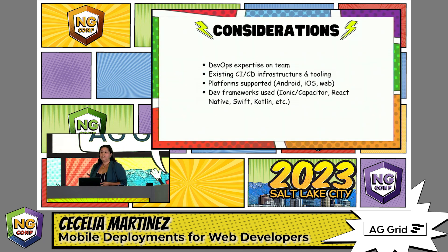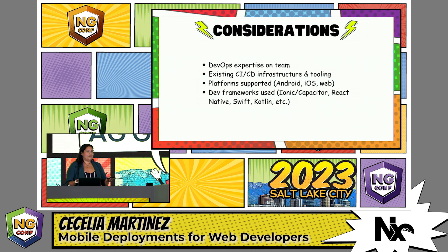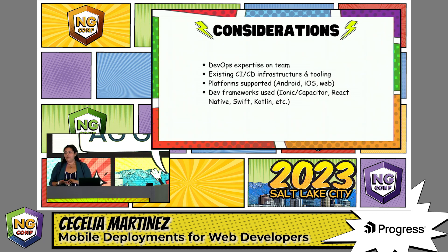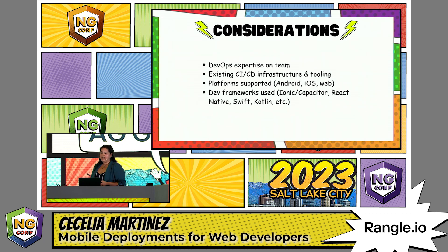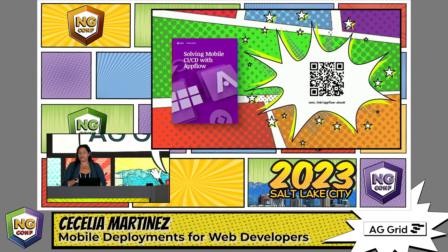When deciding which type of tools your team wants to use, there's no single right answer for every team. You need to consider the DevOps expertise on the team — do you have somebody willing and able to handle the deployments? Also think about existing CI/CD infrastructure, what platforms you support (Android, iOS, and web), and what dev frameworks are used at your organization. For additional questions about CI/CD, we have a free white paper on solving mobile CI/CD with AppFlow — scan the QR code on screen to download and learn more about how to automate your deployment process. Thanks, everyone.